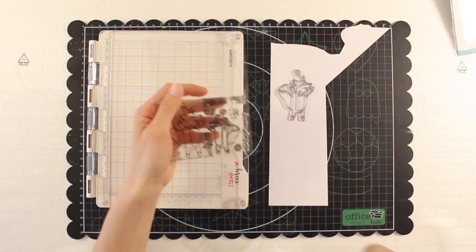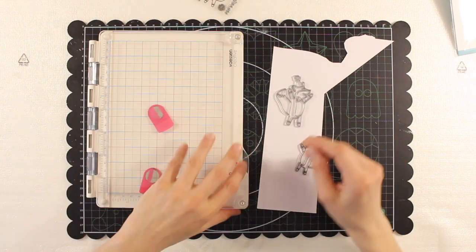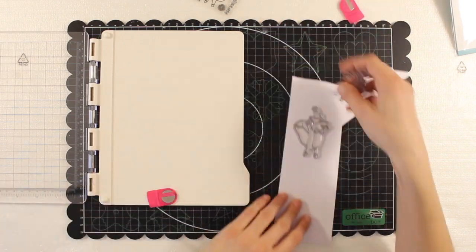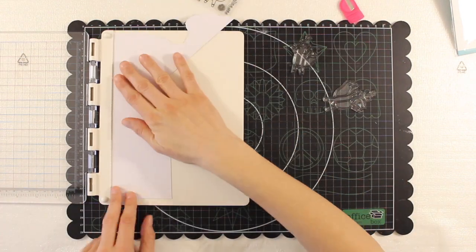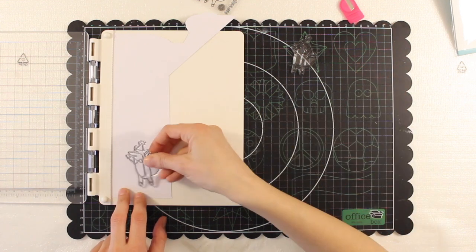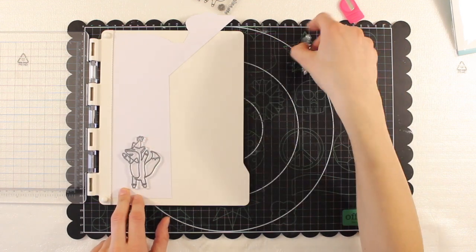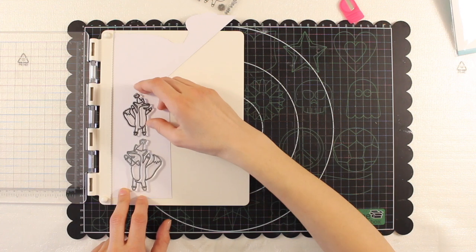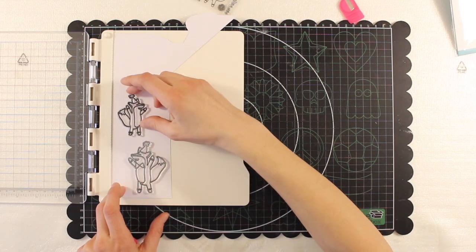First of all I'm going to use my stamping tool to stamp the two foxes in this set. I will first stamp the two foxes on a piece of white cardstock and then color and fussy cut them.